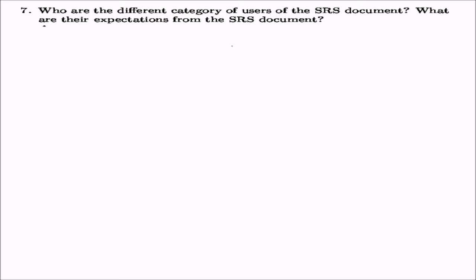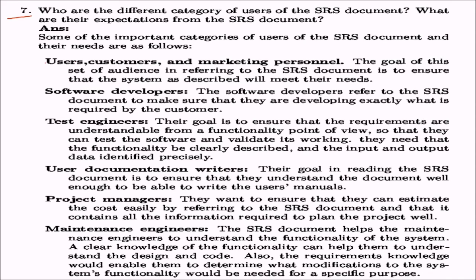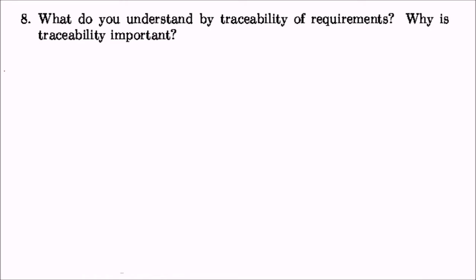What are the different categories of users of the SRS document and what are their expectations? There are various users — also called stakeholders — including user, customer, and marketing person, then software developers, test engineers, user documentation writers, project managers, and maintenance engineers. The SRS is the bible of what you are going to make, so everyone from the user to the maintenance person is going to look at the SRS.